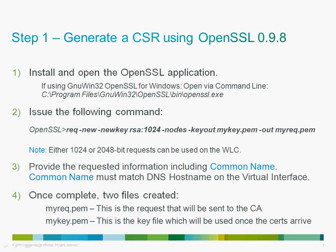Step 1 is to generate a CSR using OpenSSL 0.9.8. First, install and open the OpenSSL application — there's a download link for Win32 Windows 0.9.8 in this tutorial. Once opened, issue the following command, which will create a CSR file to give to your certificate authority. You can create a 1024 or 2048-bit request — just swap out 1024 if you want 2048. Be sure to provide the request information including the common name, which must match the DNS hostname on the virtual interface of the wireless controller — the fully qualified domain name, for example wifi.yourdomain.com. Once complete, you'll have two files: myrequest.pem (sent to the CA) and mykey.pem (used later when certs return). Be sure to keep both files.